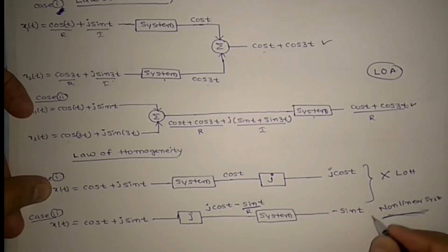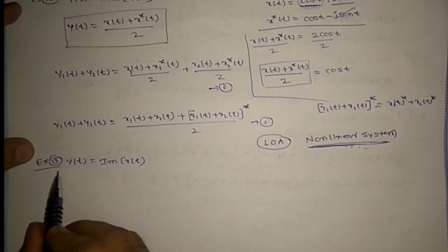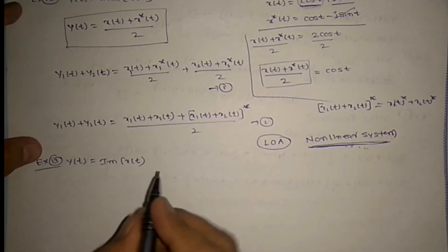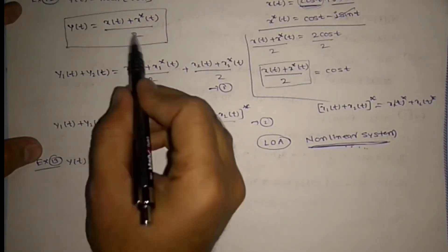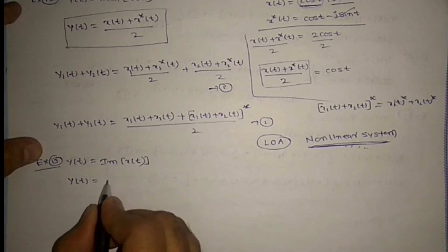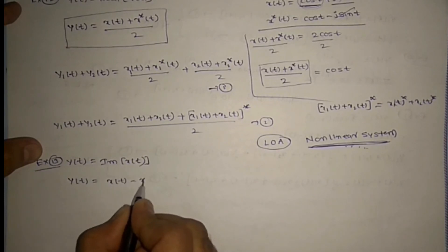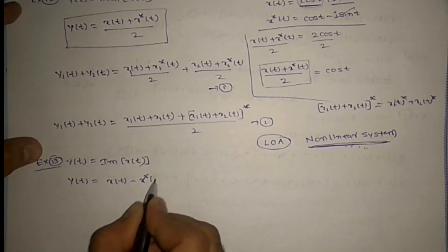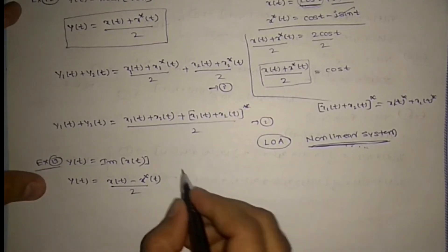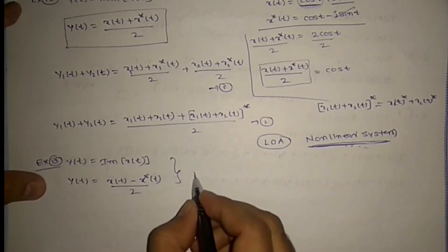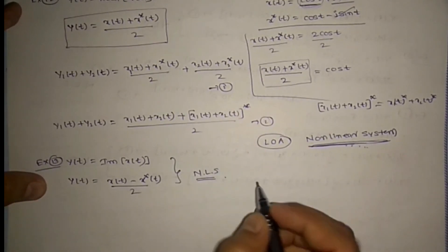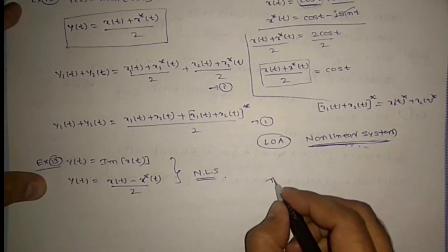This is a very, very important result — it is asked many times in exams. Similarly, Example 13: Y(t) = Im{X(t)}, which equals [X(t) − X*(t)] / 2j, is also a non-linear system. You can verify it yourself. Thank you.